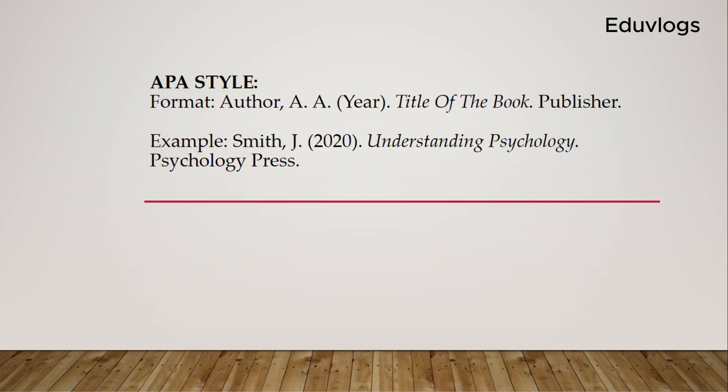If you are using the APA style, the format for writing a single authored book is: you write the author's name first, the initials, the year, the title of the book, and the publisher. Having an example here, you can see: Smith J., 2020, Understanding Psychology, Psychology Press. Smith is the author's surname, J. is the author's first name initial, 2020 is the year of publication, Understanding Psychology is the title of the book, and Psychology Press is the publisher.